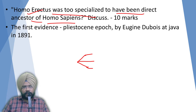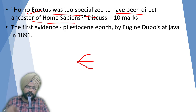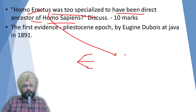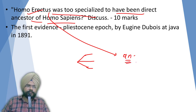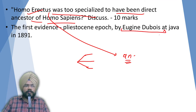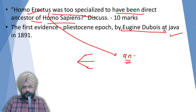Homo erectus was properly bipedal like humans, and his cranial capacity was just like that of modern humans. So we considered Homo erectus a possible ancestor of humans. This hypothesis was first given by Eugen Dubois, based on his evidences at Java. He first discovered Homo erectus in Java, and initially he found a thigh bone.